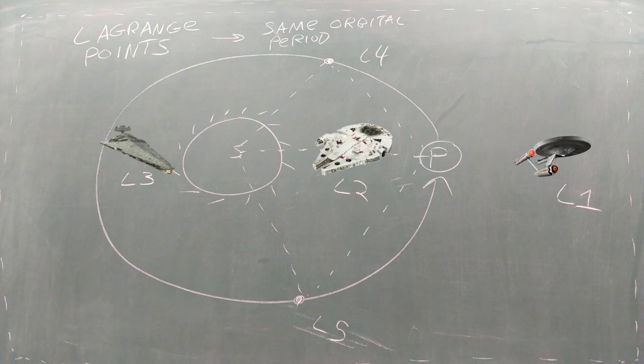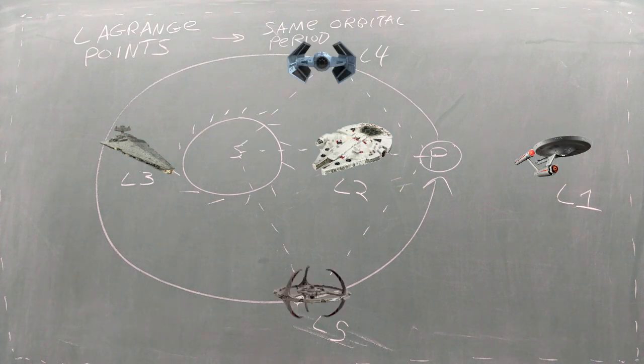The fourth and fifth Lagrange points are located along the orbit of the planet, making equilateral triangles with the star and the planet. Again, spacecraft at each of these locations will rotate in sync with the planet.